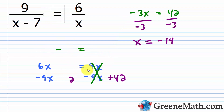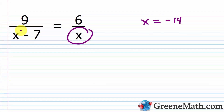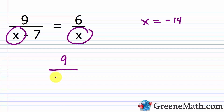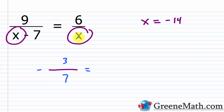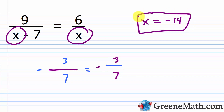Let's check by plugging in -14. On the left: 9 over (-14 - 7) = 9/(-21). Each is divisible by 3, so this simplifies to -3/7. On the right: 6/(-14). Each is divisible by 2, giving 3/7, which is -3/7 with the negative sign. We get -3/7 = -3/7, so x = -14 is the correct solution.